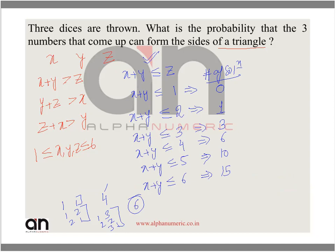If you observe the sequence of solutions — 0, 1, 3, 6, 10, 15 — these are forming triangular numbers. This is a series of triangular numbers, which is very common in CAT exams. Many questions have been asked in CAT based on triangular numbers, so this is a useful observation.